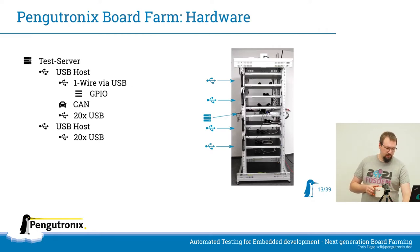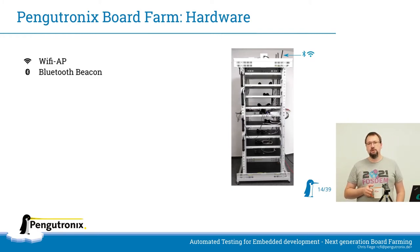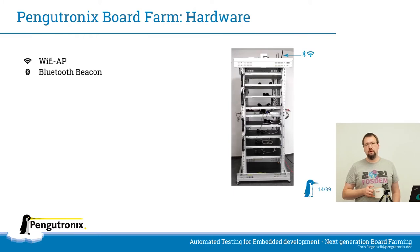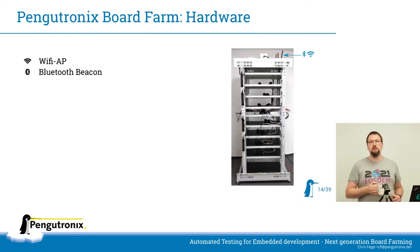One more thing in every lab is a Wi-Fi access point — a consumer TP-Link device flashed with OpenWRT — providing a well-known 2.4 and 5 GHz Wi-Fi access point where devices under test can connect. We also have a Bluetooth stick in the USB port of these access points, providing a known Bluetooth beacon that devices under test can scan for.